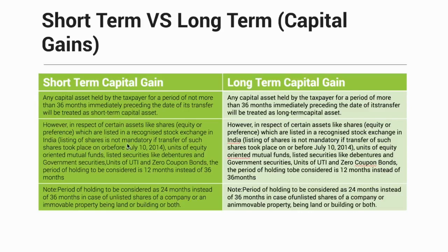The second category under the 12-month exception includes units of equity-oriented mutual funds. Similarly, listed securities like debentures, government securities, units of UTI, and zero coupon bonds also fall under the 12-month holding period instead of the standard 36 months.